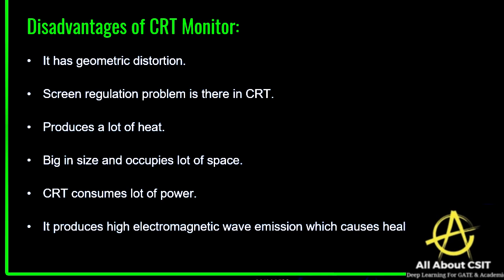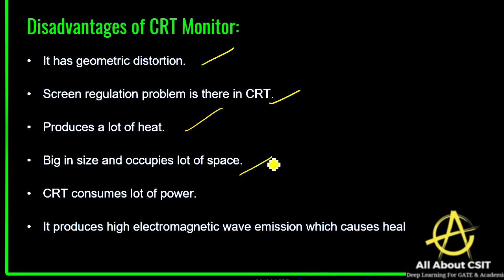Disadvantages of the CRT: it has geometric distortion and screen regulation problems that must be monitored regularly. It produces a lot of heat due to heating the filament. It is big in size and occupies a lot of space since it is a vacuum tube. It consumes a lot of power. It produces electromagnetic wave emissions which cause health hazards — the high electromagnetic waves from the electron gun can affect the eyes while watching the screen.